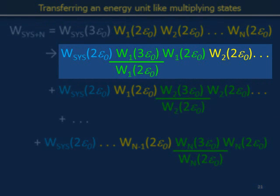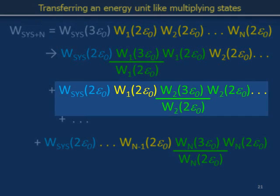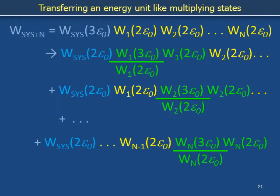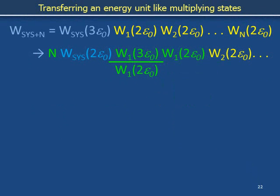The number of world configurations with energy 2ε₀ in the system, energy 3ε₀ in part 1, and energy 2ε₀ for all remaining bath parts is equal to the number of world configurations with energy 2ε₀ in the system, energy 3ε₀ in part 2, and energy 2ε₀ for all remaining parts. We get the same number of configurations regardless of which single part of the bath has energy 3ε₀. We add up all these ways, giving n copies of the same number.